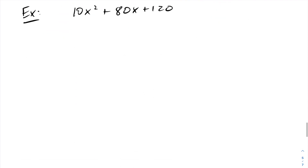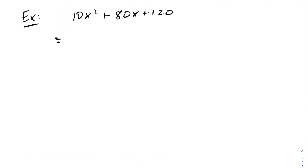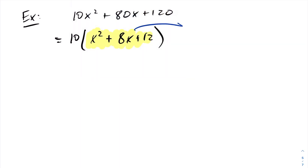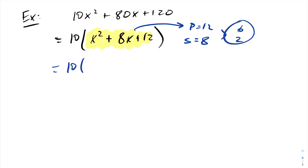Again, it doesn't appear to be simple at first, but I can factor out that 10, leaving x squared plus 8x plus 12 — a simple trinomial inside the brackets. I need two numbers that multiply to be 12 and add to be 8, which are 6 and 2. So this factors into 10 times x plus 6 times x plus 2.